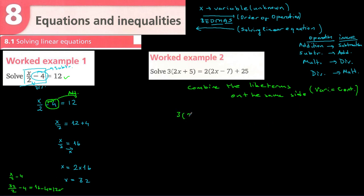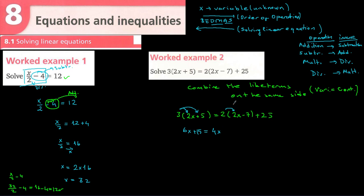The equation is: 3 times (2x + 5) equals 2 times (2x − 7) plus 25. First, I need to get rid of the parentheses. Expanding: 3 times 2x = 6x, and 3 times 5 = 15, giving 6x + 15. On the right: 2 times 2x = 4x, and 2 times −7 = −14, plus 25.